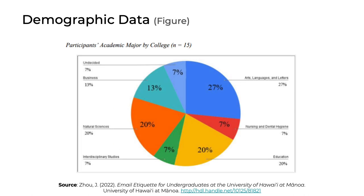Here's another example — a pie chart titled Participants' Academic Major by College. For this particular project, it was argued that participants' major might be important, so the demographic survey collected that information. The pie chart makes it really easy to discern that 27 percent of participants majored in art, languages, and letters; 20 percent in education; and another 20 percent in natural sciences. Don't overdo it with pie charts, but occasionally they can be a useful approach to visualizing demographic data.